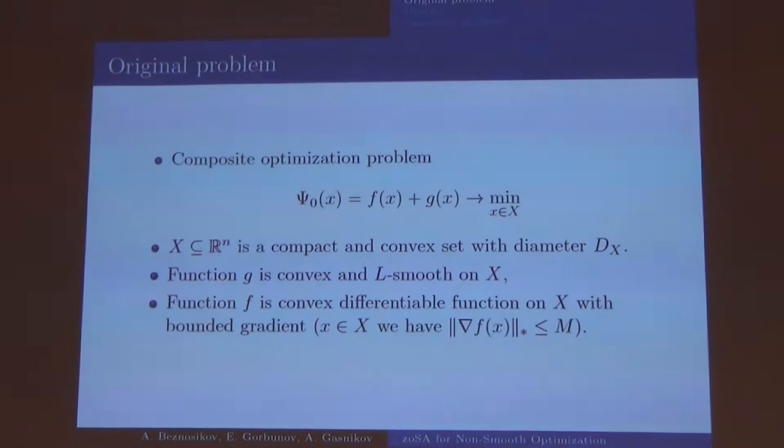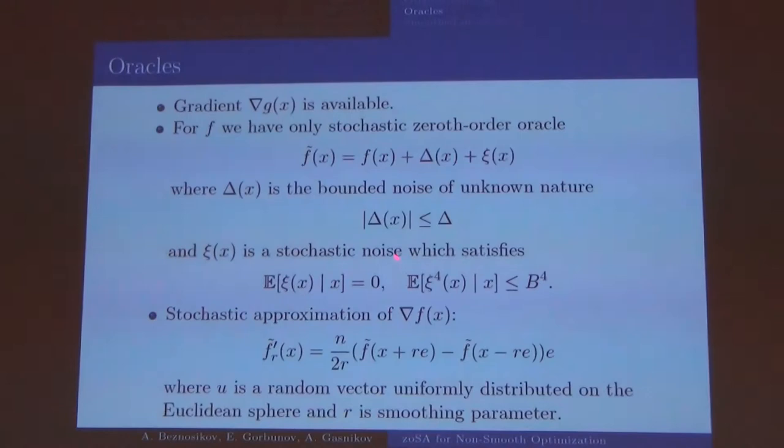We have composite optimization problem where X is compact and convex set with diameter DX. Function g is good, it's convex and L-smooth in our set. And function f is not good, it's convex and we don't know about its L-smoothness, we only know that its gradient bounded by constant M.